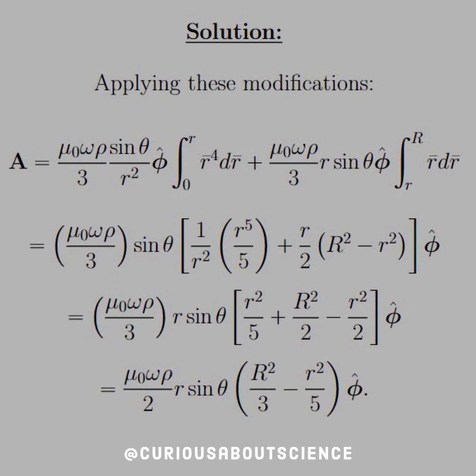Again, both in the phi hat direction. We factor out one r and simplify it through. So you see here that the first term is now r squared because r squared divided by r to the fourth, and then plus big R squared minus little r squared over two. All we got to do is find a common denominator. We do that and then we factor out a one half, as you see with the new constants. And yeah, that simplifies down pretty well.